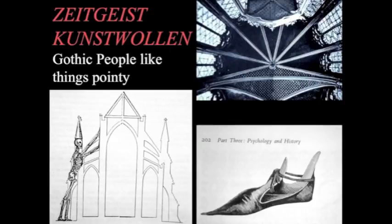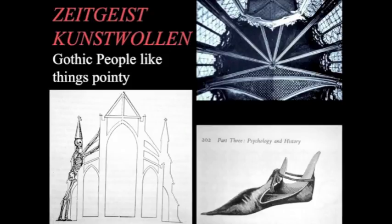If we begin to think about Zeitgeist and Kunstwollen, we can begin to see a shift from one style — Romanesque — to another style — Gothic. Frequently these shifts are motivated by different cultural aspirations or a desire to represent different things. We already saw that when we looked at Greek temples versus Roman temples — the Greek temples had a quite different relationship to the landscape than the Roman temples, reflecting different civic and spiritual aspirations.